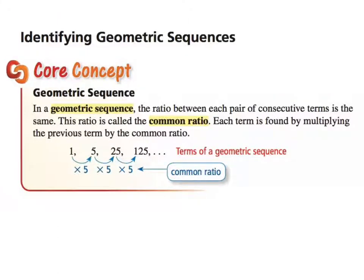Here is your key concept. In a geometric sequence, the ratio between each pair of consecutive terms — that means from one term to the next — is the same. This ratio is called the common ratio. We always write it in terms of multiplication. So for example, going from 1 to 5, 5 to 25, 25 to 125 — we are multiplying by 5. Therefore, our common ratio is 5.